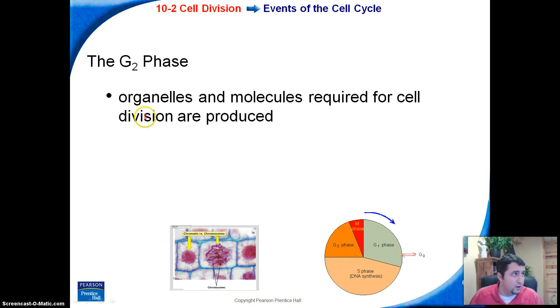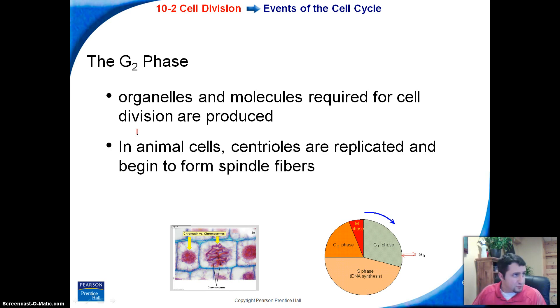The G2 phase, what happens there? Well, organelles and molecules required for cell division are produced. So we are going to basically make everything that the cell needs to survive on its own during this phase. Think of that sort of like making yourself ready, prepping yourself up for that big event happening in your life. Now, in animal cells, centrioles are replicated and begin to form spindle fibers.